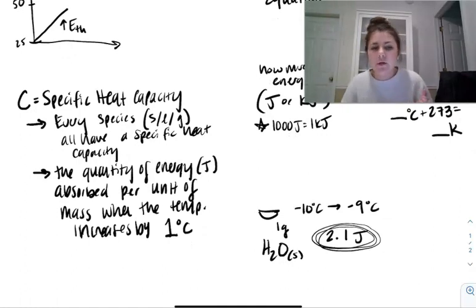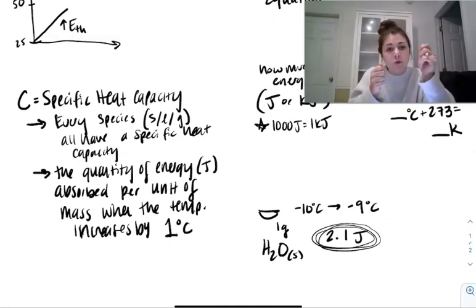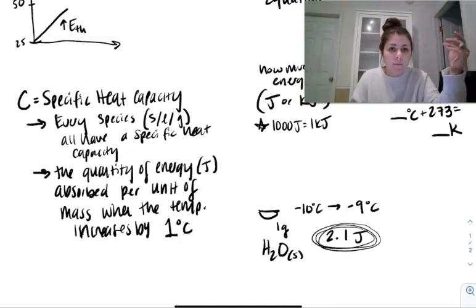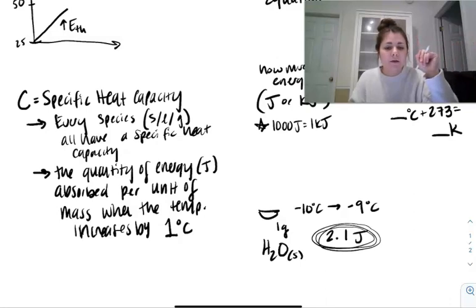Kind of to help you understand this, if you light a match, and you have the match just chilling there, that's considered one joule of energy. So here, imagine two matches. That's able to change that one gram of ice by one degree Celsius.